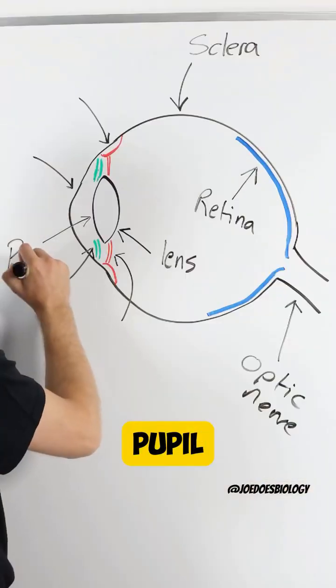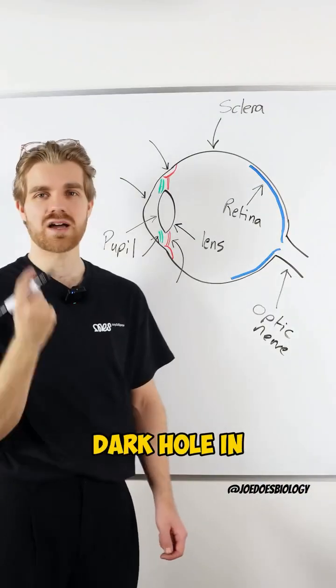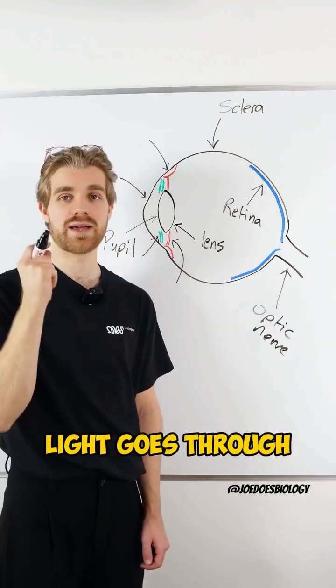This is the pupil. This is the dark hole in the center of the eye where the light goes through.